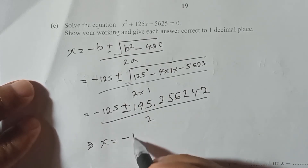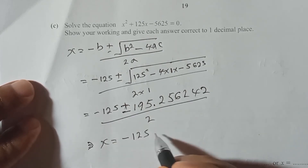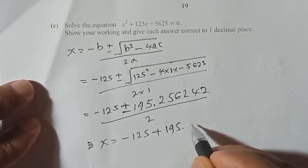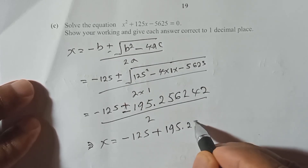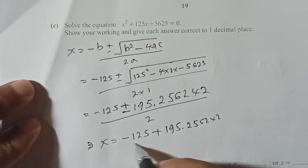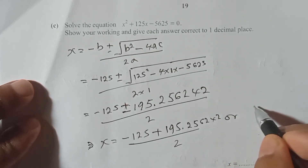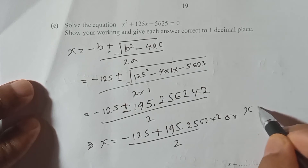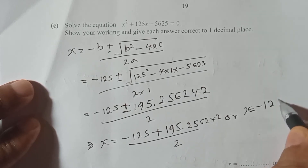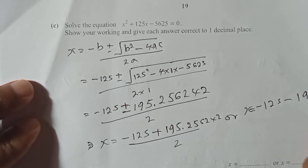The two solutions are: x equals minus 125 plus 195.256242 over 2, and x equals minus 125 minus 195.256242 over 2.